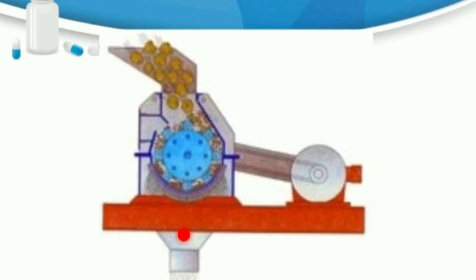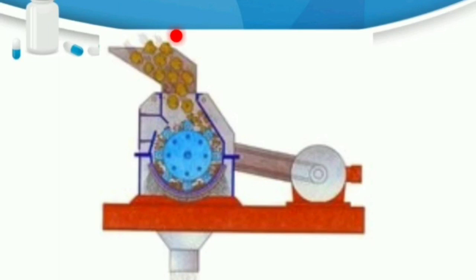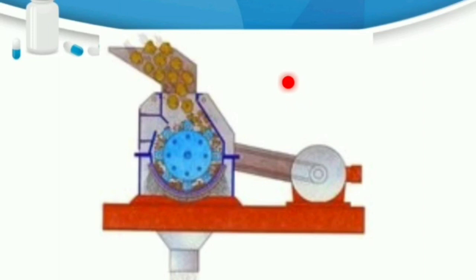First, the principle of the hammer mill: the material is fed through the hopper. The hammer mill operates on the principle of impact — the hammers are continuously moving, mounted on a rotor, and they beat the material to achieve size reduction.